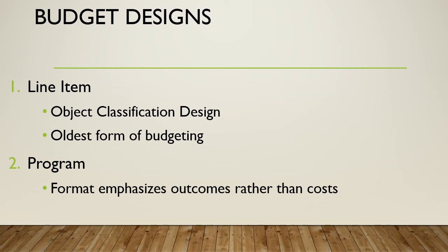The line-item budget is an object classification design. It's the oldest form of budgeting, and probably the most popular budget design overall. Next, you can use a program budget. This budget looks at outcomes rather than cost — you think about what outcome you want to achieve and then build up costs from there. Whereas a line-item budget adds cost plus cost plus cost, a program budget says: I want to achieve this outcome, and let's see what it costs from the bottom up.